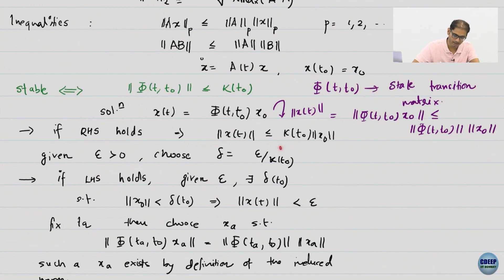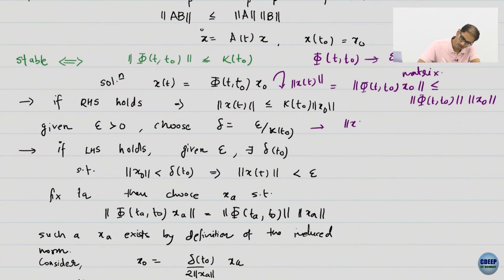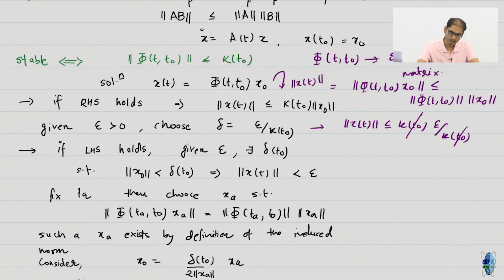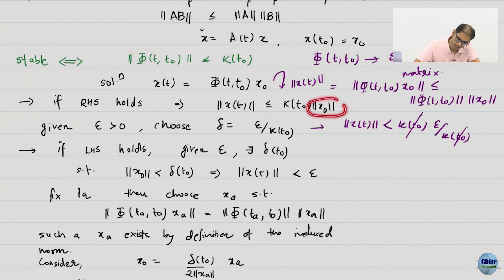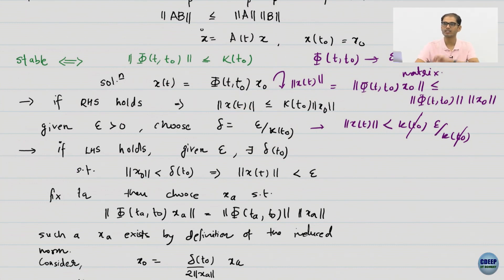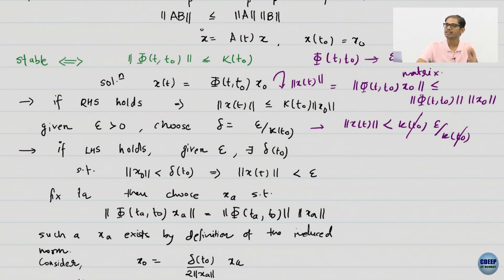If I am given an epsilon, I choose my delta as epsilon divided by K(T0). It is obvious that if norm of x0 is less than delta, then norm of x is less than or equal to K(T0) times epsilon divided by K(T0), which equals epsilon. And since the initial condition is strictly less than delta, this becomes a strict inequality.